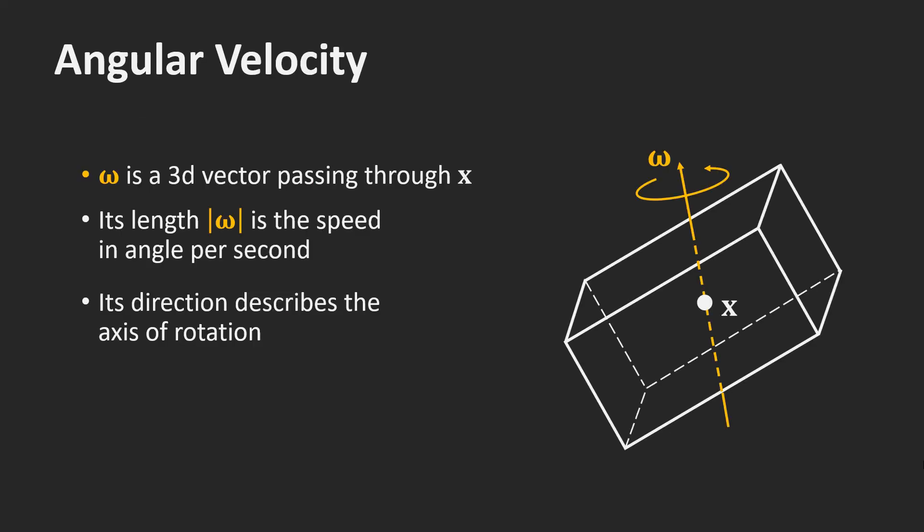In addition to the velocity of the center of mass, a rigidbody has an angular velocity, omega, which is a 3D vector passing through the center of mass. Its length defines the speed of the rotation in angles per second. Its direction describes the axis of rotation. The velocity of a point on the body can now be computed as omega cross r. If the body is in motion, we have to add the velocity v of the center of mass as well.